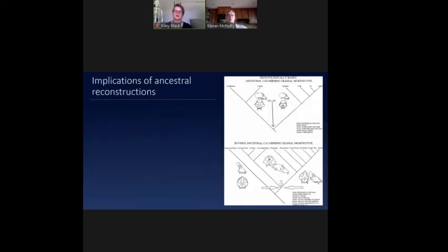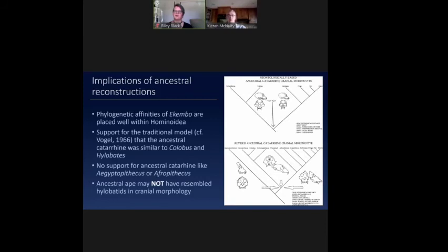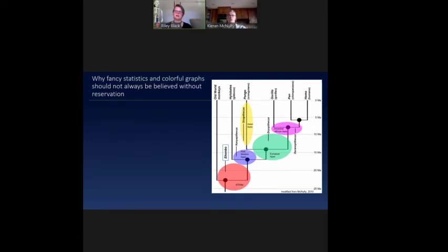So what are the implications of our analysis? Well, phylogenetic affinities of Akembo have typically placed it within the hominoidea. If we take this phylo-morphometric approach, we get a similar answer. We also find support for this traditional or neonatological model of the ancestral catarine being similar to the colubines and the gibbons. And in my model, I found no support for the ancestral catarine looking like Egyptopithecus or Afropithecus. So the ancestral ape may not have resembled hylobatids in its facial morphology.